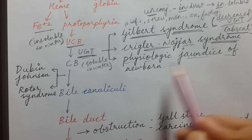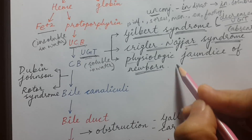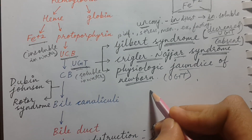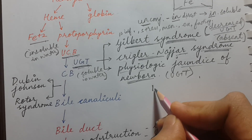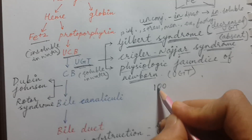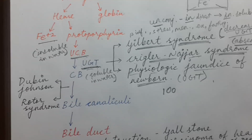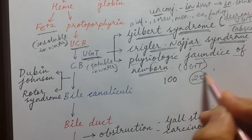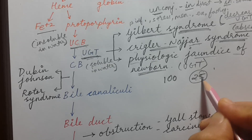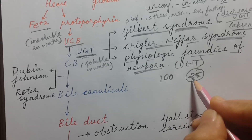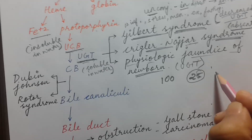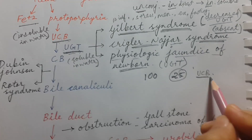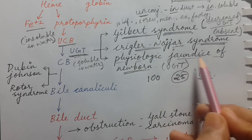The third cause is physiologic jaundice of the newborn, in which there is a relative deficiency of UGT in the first few days of life. In a normal person the liver can conjugate 100% of bilirubin, but in a newborn the capacity may be only 25%, so the remaining unconjugated bilirubin floats in the blood and causes jaundice.